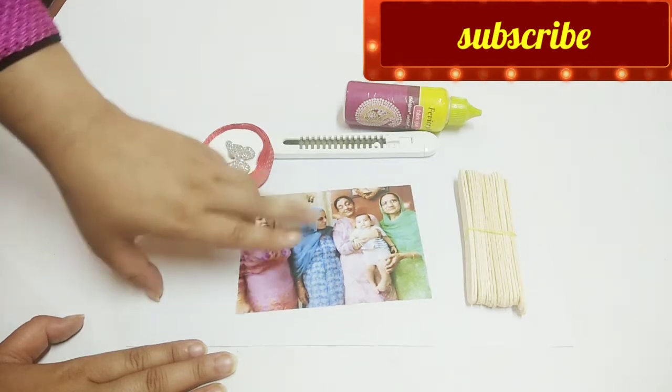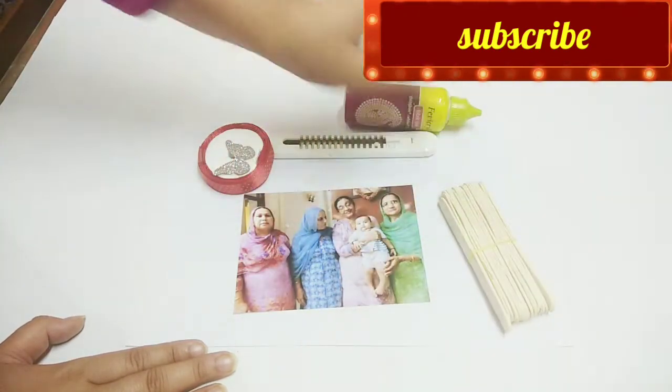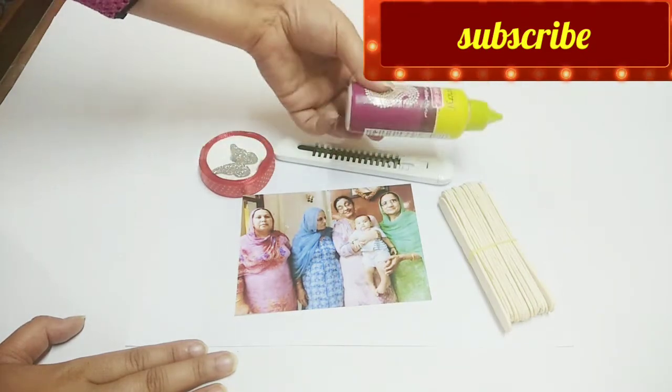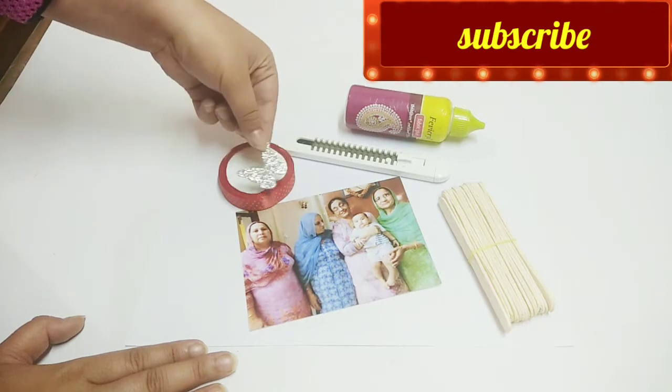You should have a photograph which you want to make a puzzle and you will require some ice cream sticks, a cutter, a fevicol, ribbon and if you want, you can use a sticker for decoration.